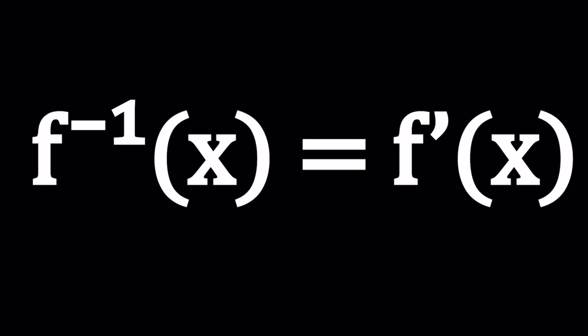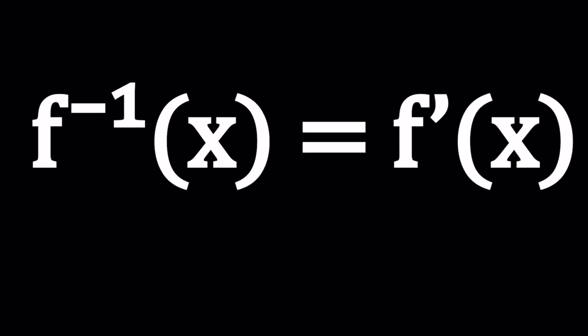f inverse doesn't mean 1 over f(x). It just means the functional inverse of f(x). Usually, it's written that way. And we're going to go ahead and solve this problem, find solutions. And also, we're going to take a look at the result from Wolfram Alpha, which I find pretty interesting. How do you find such a function so that its inverse equals its derivative?